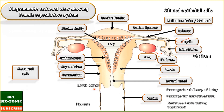The next part is the vagina. It is a tubular copulatory organ with a length of 7 to 9 cm. Its wall is made up of three layers: outermost adventitia, a middle muscular layer, and innermost stratified epithelium. The vagina opens into the vestibule through the vaginal opening, which is covered by a mucous membrane called the hymen. The vagina serves as a passage for delivery of the baby, for menstrual flow, and receives the penis during copulation.